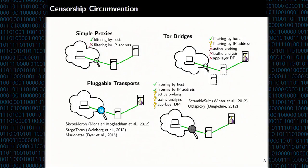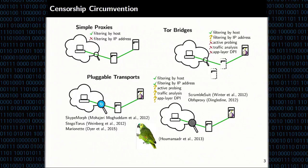Each of these defends against attacks to various extents. However, it's been shown that it is very difficult to mimic allowed protocols. The Parrot is Dead paper showed that slight differences in mimicry are detectable by censors. This results in a cat-and-mouse game where we're trying to mask traffic while censors improve their ability to distinguish between different kinds of traffic.